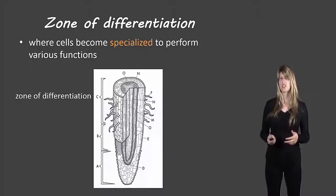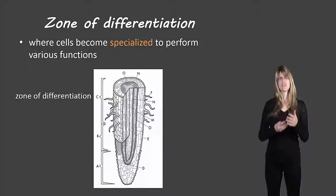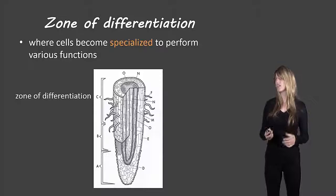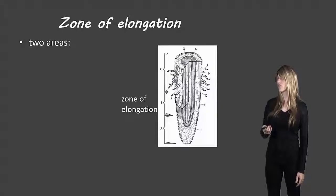First of all the zone of differentiation is where cells become specialized to have various different functions. So we talked about meristematic tissue in the lecture on tissues. And so in here we have lots of meristematic tissue that becomes differentiated into certain types of root cells and then that gives the root the various functions that it needs. So that's the zone of differentiation.